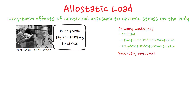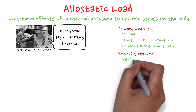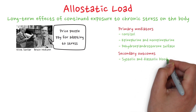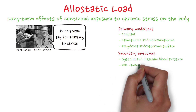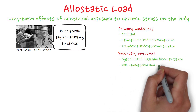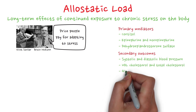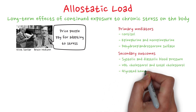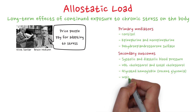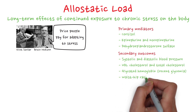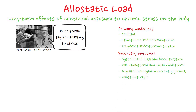Secondary outcomes are systolic and diastolic blood pressure, HDL cholesterol and total cholesterol, glycated hemoglobin — which is the measure of recent glycemia — and waist-hip ratio.